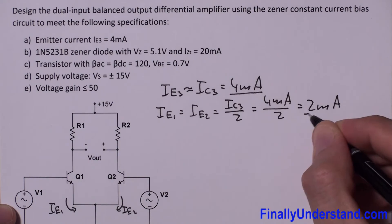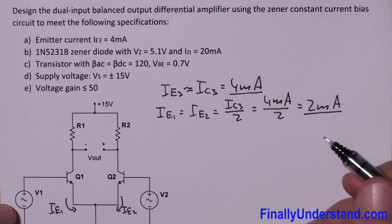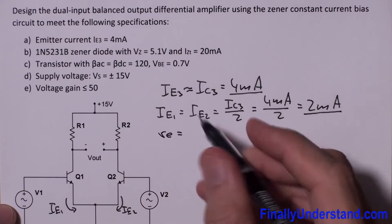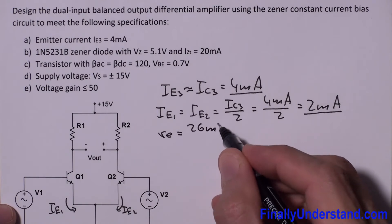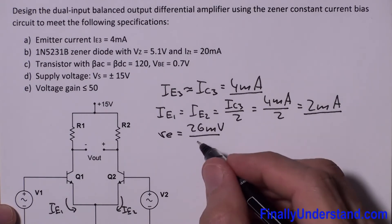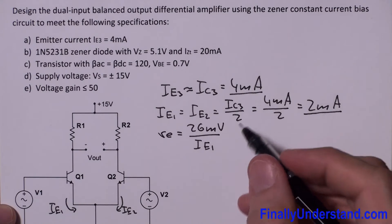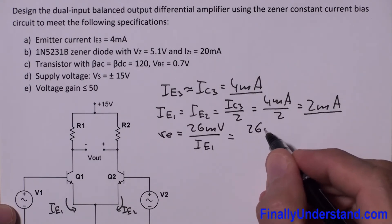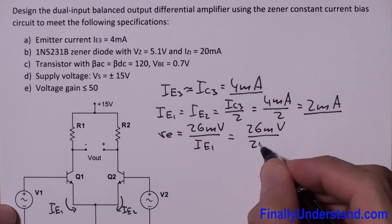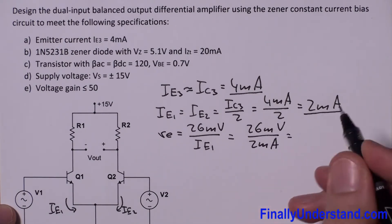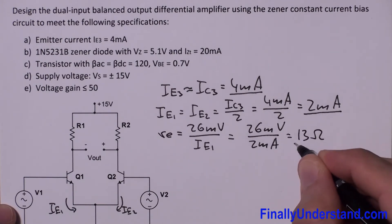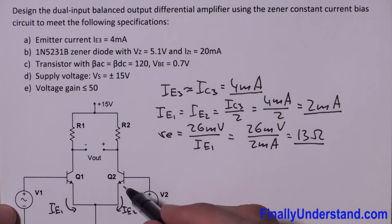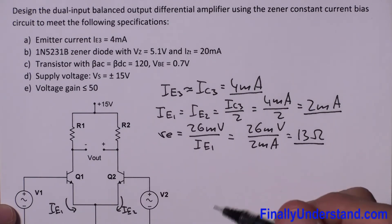Next, I'm supposed to find the value of small re. Small re is equal to 26 millivolts over IE1 or IE2 — you can use either current. This is equal to 26 millivolts over 2 milliamps, which equals 13 ohms.